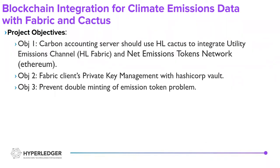Initially, we started with the following project objectives. The first was to build a carbon accounting server that would use Hyperledger Cactus to integrate with Hyperledger Fabric and Ethereum. The second objective was to have proper management of Fabric client's private key using HashiCorp Vault. And the last objective was to prevent the double minting problem that was there in the code base.